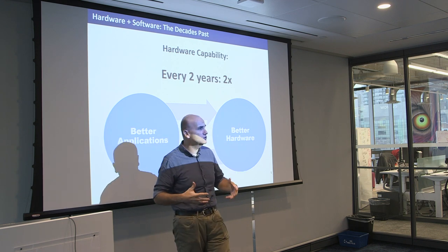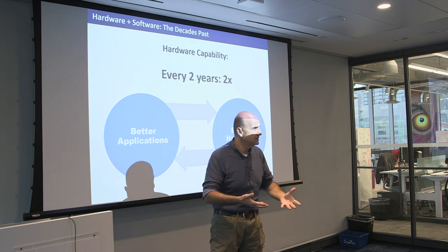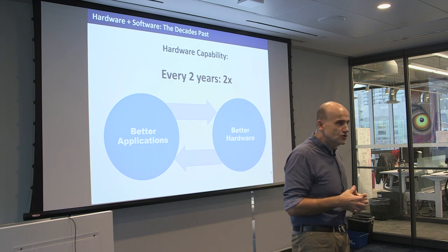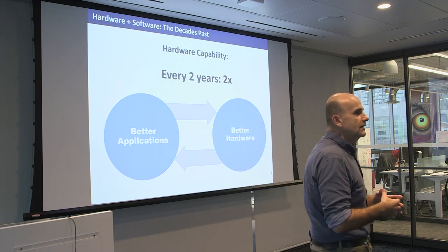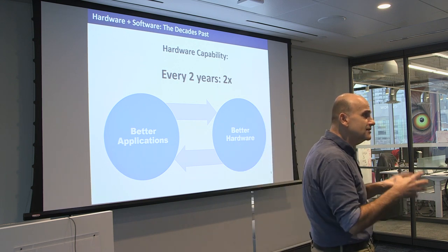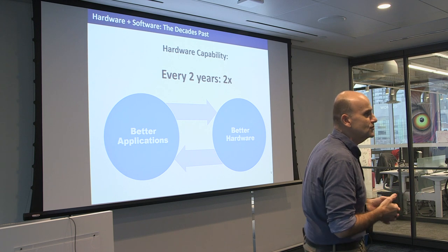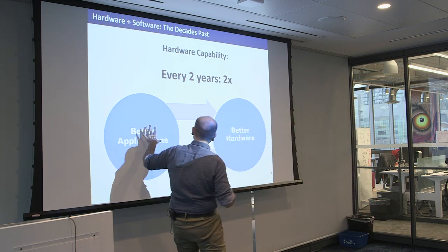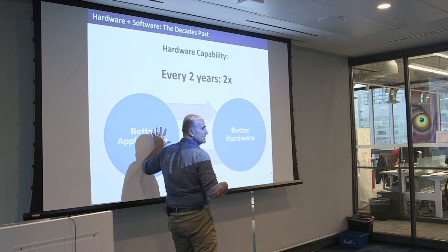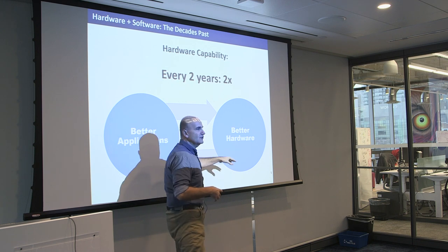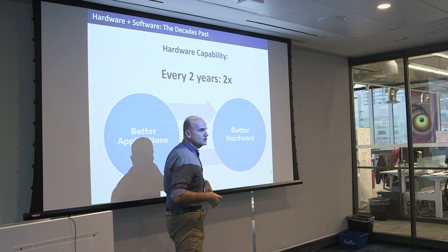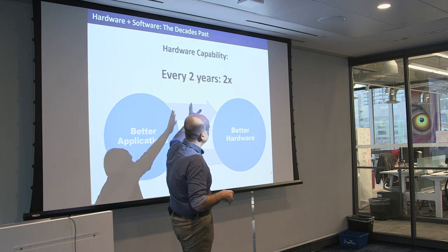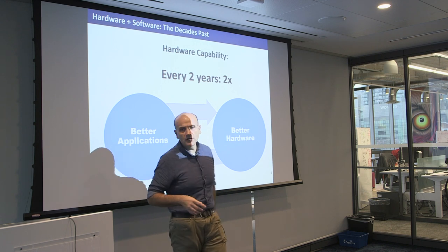People who do architecture were able to harness these additional resources to provide additional performance. People were building better applications, better hardware, and so forth — it was a nice feedback loop. Every two years you'd get a 2x improvement.